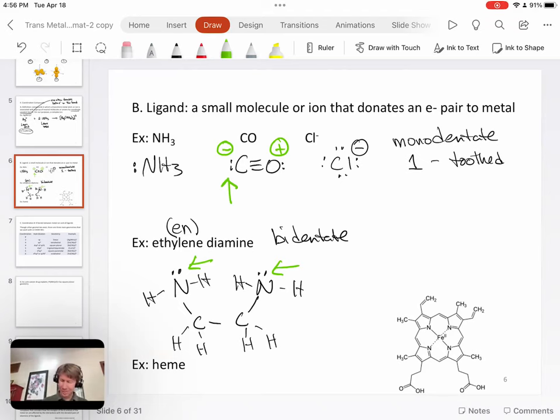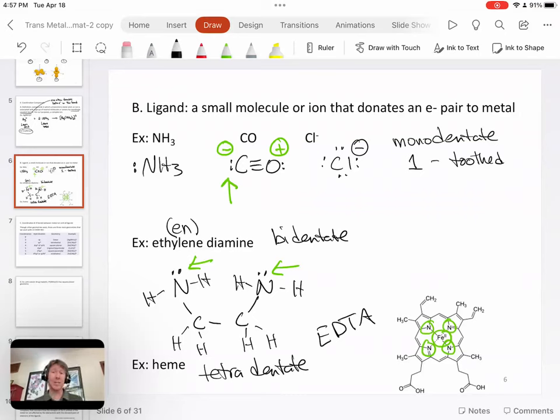I've also got a picture of heme here. Heme is a tetradentate ligand. And you can see we've got, I think you can see in here, we've got an Fe2+, which is an Fe2+. And it's actually got four nitrogens around it. Those four nitrogens are the four teeth that bite on the iron 2+ ion. Another very common tetradentate ligand is going to be EDTA, ethylenediamine tetraacetic acid.